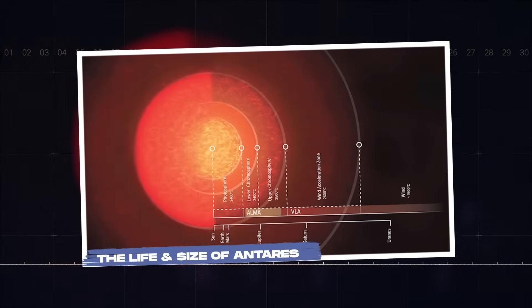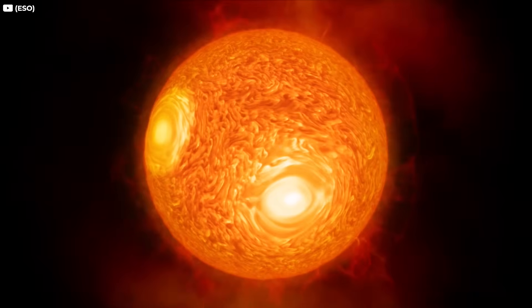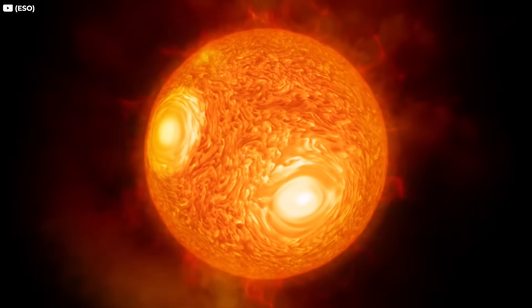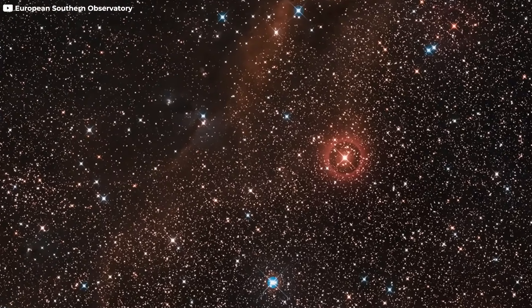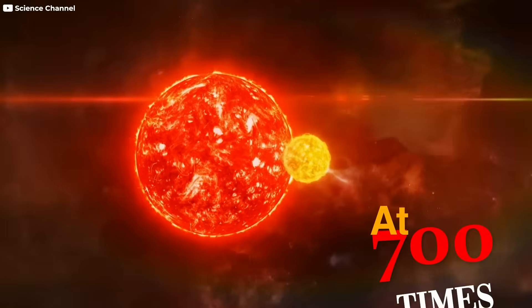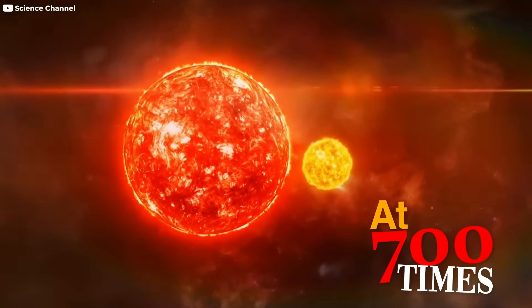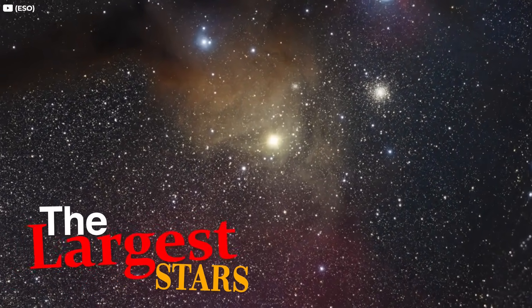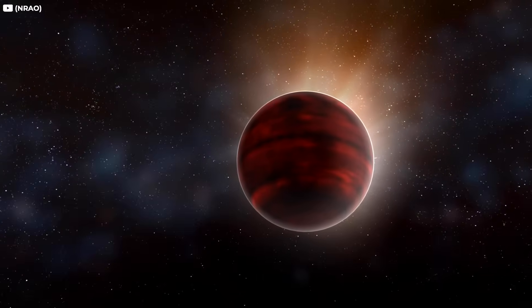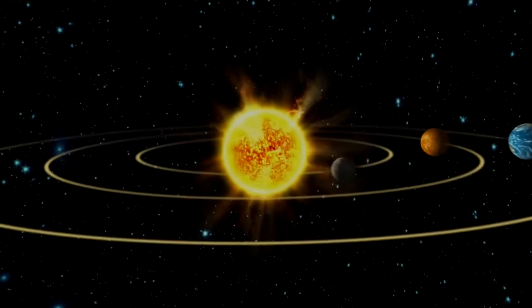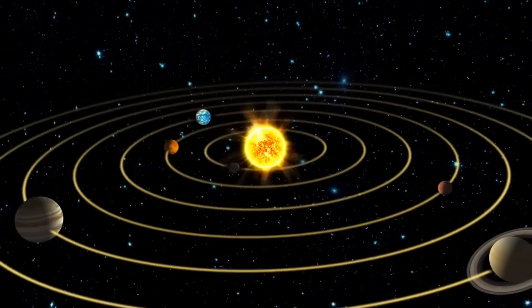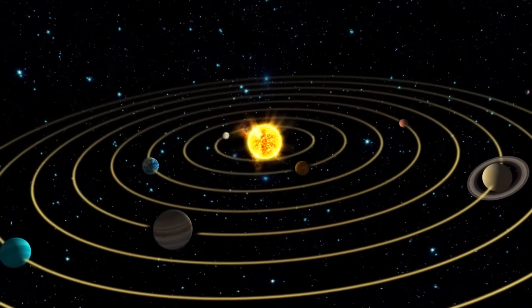The life and size of Antares. This red supergiant known as Antares is a true giant of the night sky. At 700 times the size of our sun, it is one of the largest stars in our galaxy. To give you a sense of its magnitude, if Antares were placed at the center of our solar system, its surface would stretch past Mars.